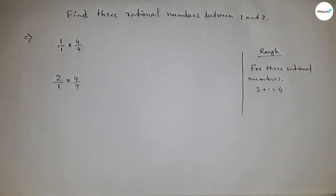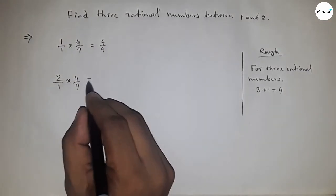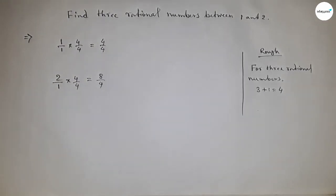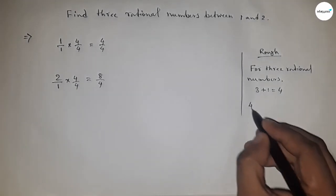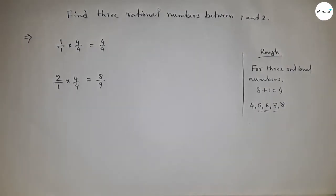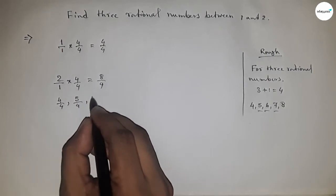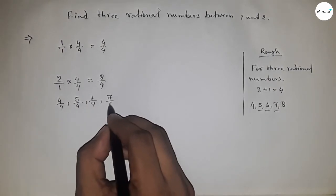This is 4 by 4 and this is 8 by 4. So 4, 5, 6, 7, 8, and by these numbers we can form three rational numbers: 4 by 4, 5 by 4, 6 by 4.